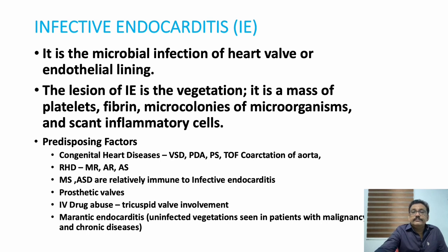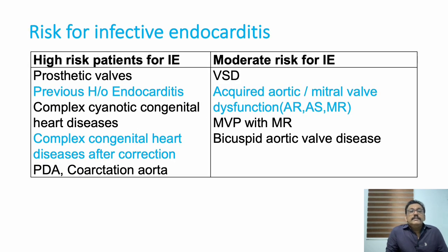Now we will see the risk stratification for infective endocarditis. High-risk conditions include prosthetic valves, previous history of endocarditis, complex cyanotic congenital heart diseases, complex congenital heart diseases after correction, PDA, and coarctation of aorta.